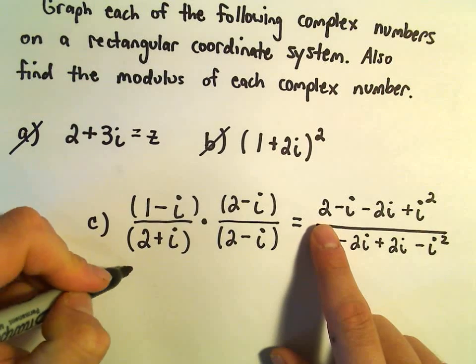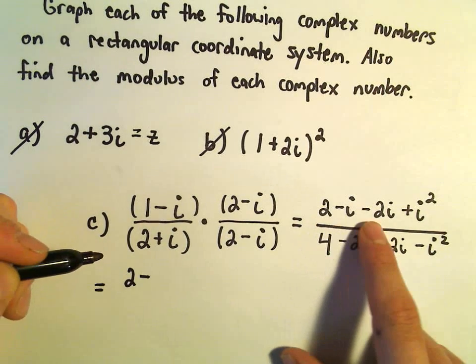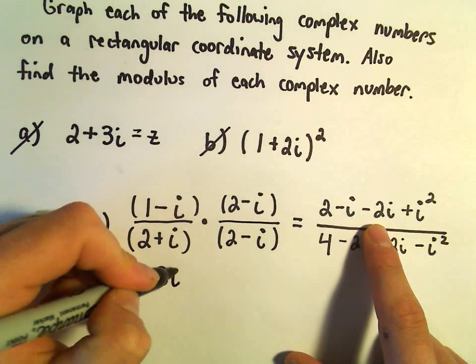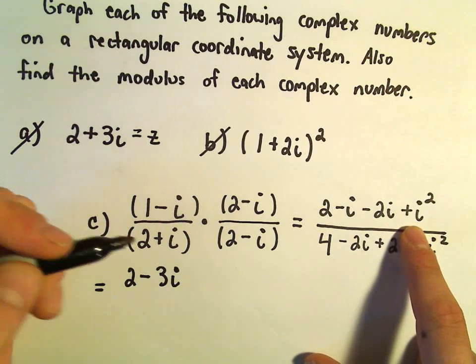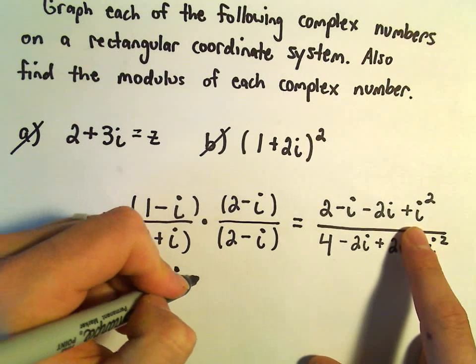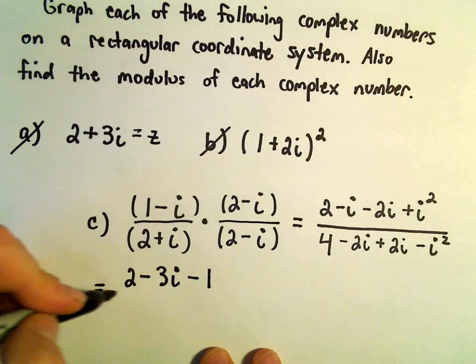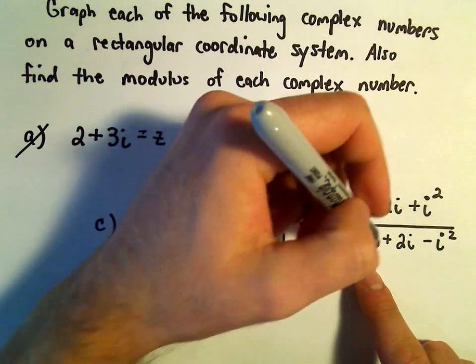So let's see, in the top, we have 2. We've got negative i and a negative 2i, that'll give us negative 3i. We have plus i squared, but that's plus negative 1, which we can write as minus 1.